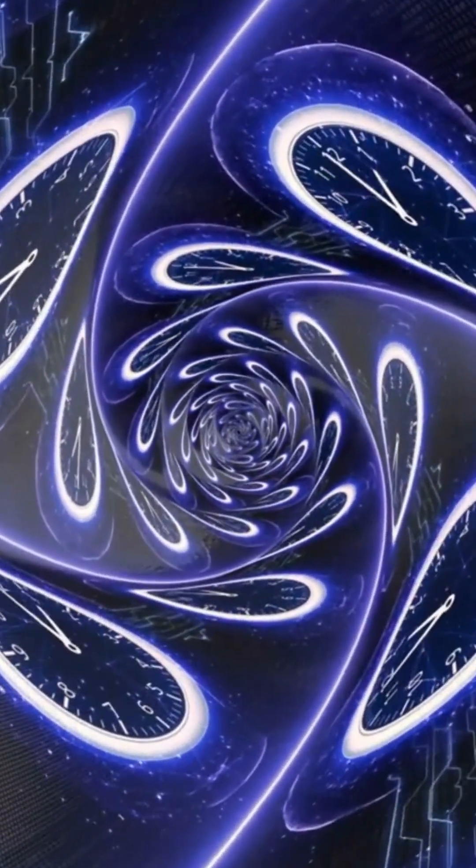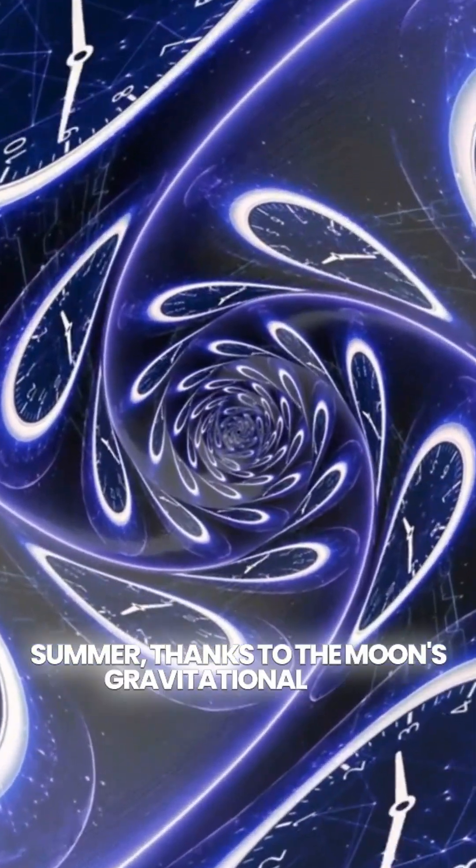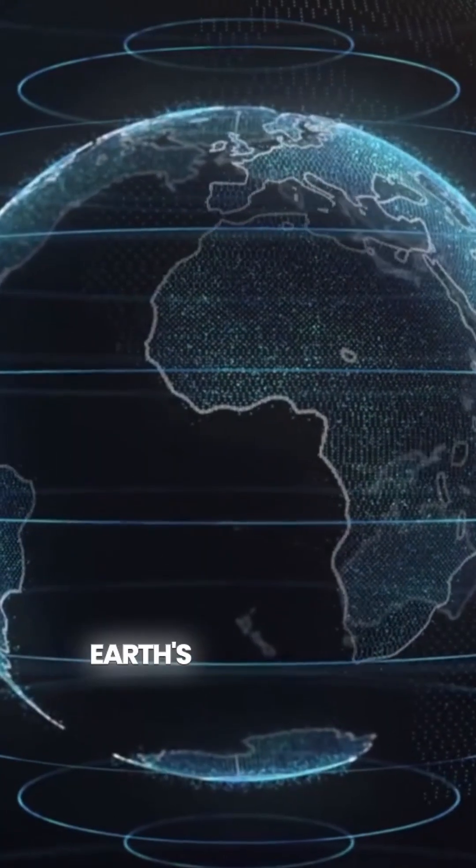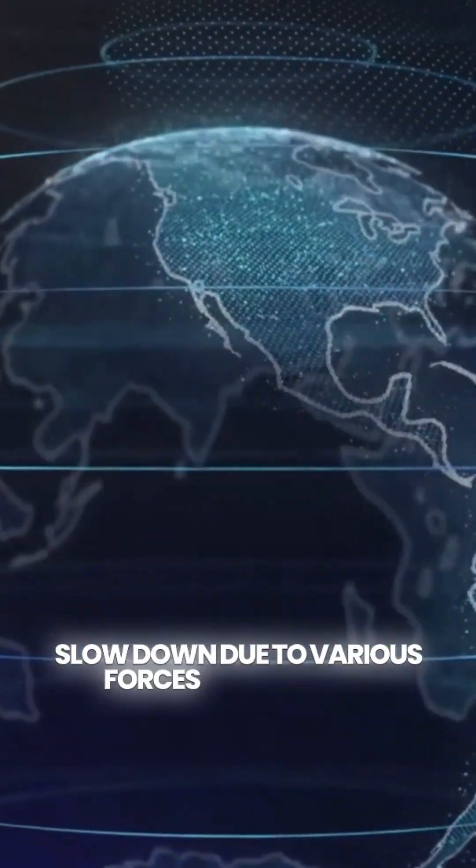And it's not just a fluke. Scientists predict two more short days this summer, thanks to the Moon's gravitational pull. Earth's rotation isn't constant. It can speed up or slow down due to various forces acting on it.